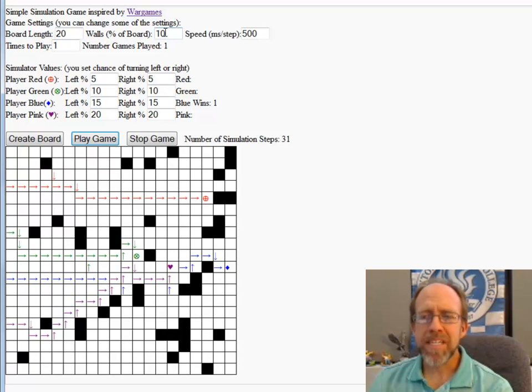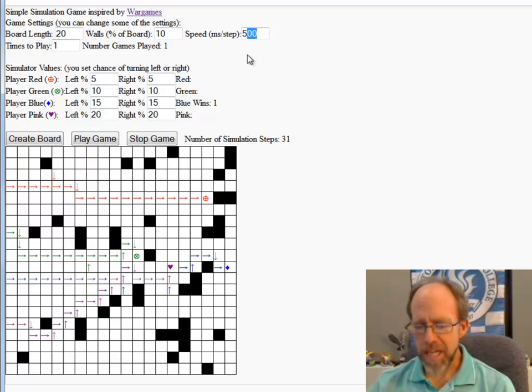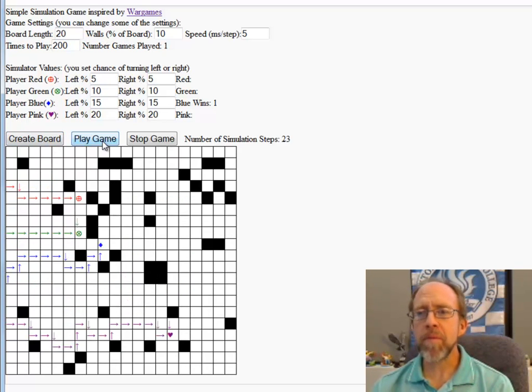Well, trying this one time is probably not going to tell you the answer to this. And this is where something like computer simulation comes in real handy. So let's change some of the parameters here. Let's first change the time step to five milliseconds. I want to run this really fast. And I want to play it 200 times, a lot of times. I'm going to keep the same percentages. I'm going to recreate the board, but now I'm going to play the game.